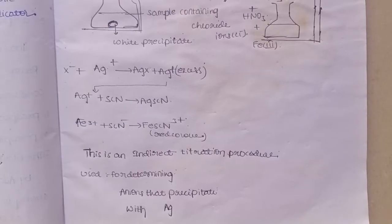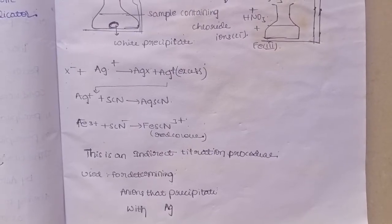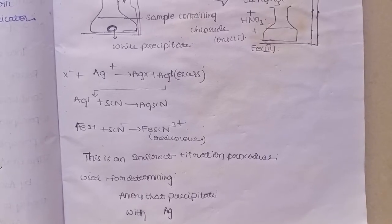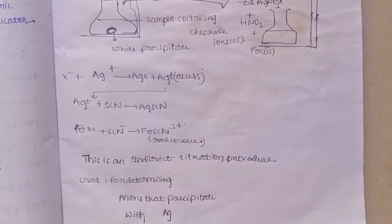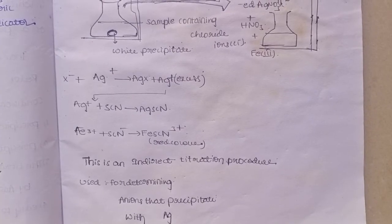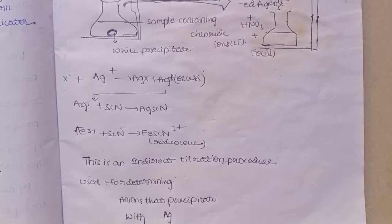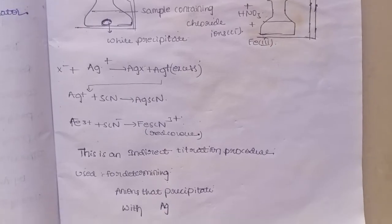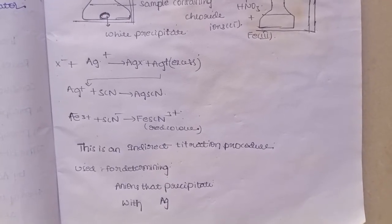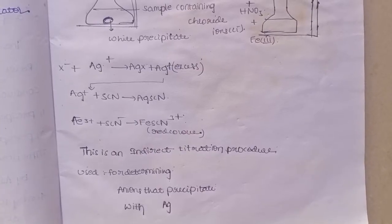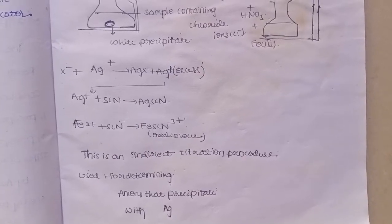There are pharmaceutical applications of Volhard's method. Some examples of drugs determined by this method include: chlorophenethane, diphenhydrinate, ethionamide, phenylmercury nitrate, and sodium chloride injection. All of these contain anions that precipitate with silver, so Volhard's method is used to determine their concentration by titration.